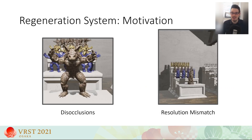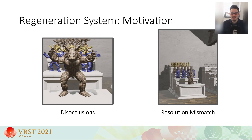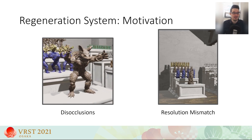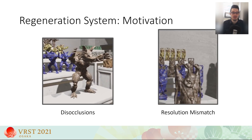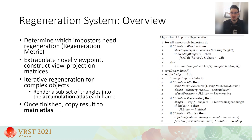Stereoscopic impostors are valid for the typical range of head movements. However, as users walk around and explore the environment, our impostors can become increasingly invalid. The two main factors are the revelation of occluded areas and a resolution mismatch between an impostor and the real object. The regeneration process consists of rendering the underlying object from a novel viewpoint and storing it inside our main impostor atlas. The first step is to determine which impostors are most in need of regeneration, based on our regeneration metric.